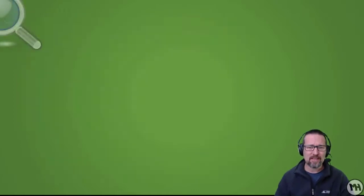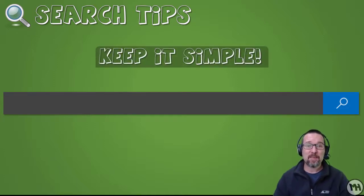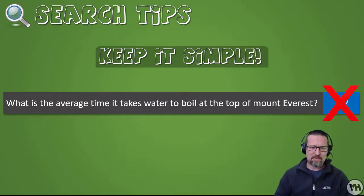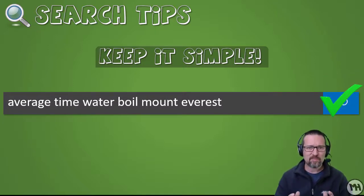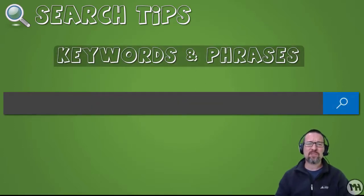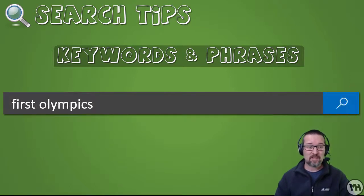Now for search tips. First tip: keep it simple. Instead of typing 'what is the average time it takes water to boil at the top of Mount Everest,' just type 'average time water boil Mount Everest.' Use keywords and phrases. Instead of 'when was the first Olympics in the world held,' just type 'first Olympics' — much easier and actually more accurate.